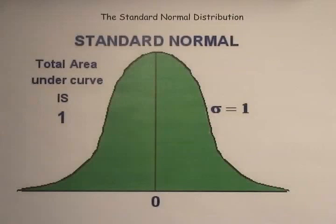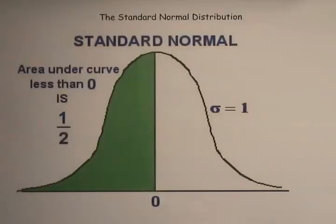And just to point this out once again, as for any normal curve, the total area underneath is always 1. And because the normal distribution is always symmetric about its mean, half of the area will always lie to the left of the mean, and of course, the other half of the area will lie to the right of the mean.